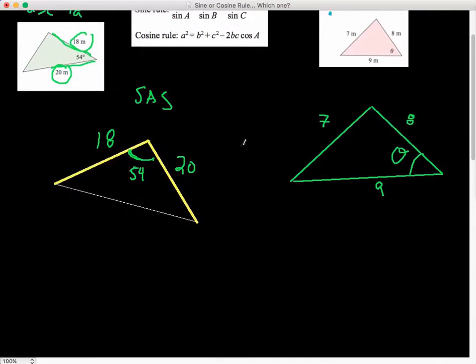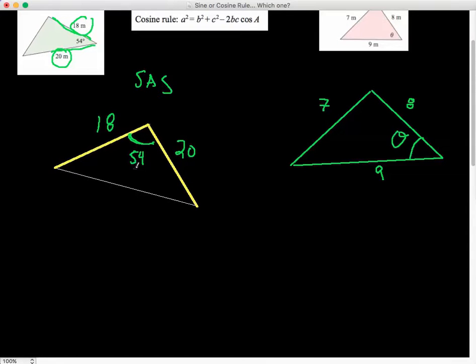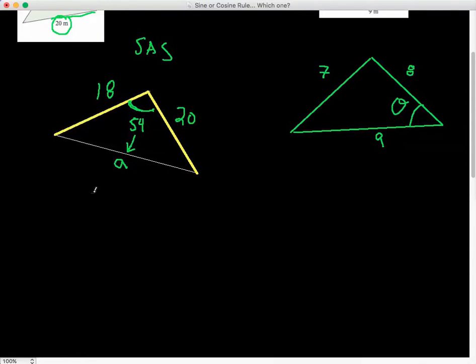So if you have a question like this, I would immediately label the side across from your angle small a because that is the side that we can find. And so if you look on the formula sheet, you will get a formula that is a squared is equal to b squared plus c squared minus 2bc cos of A.